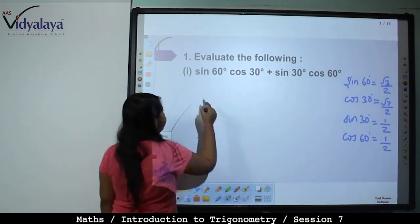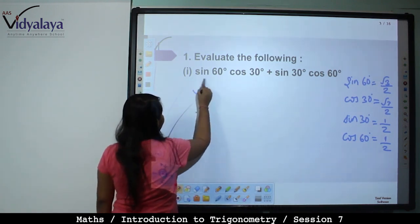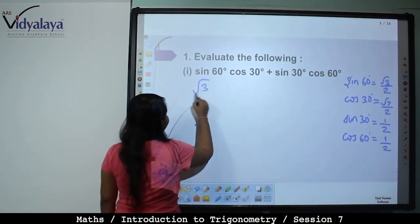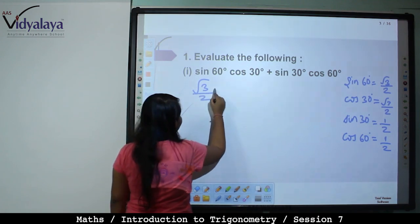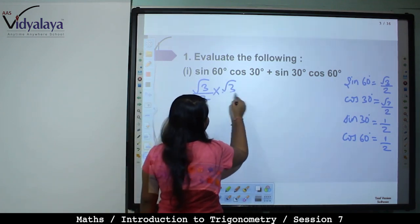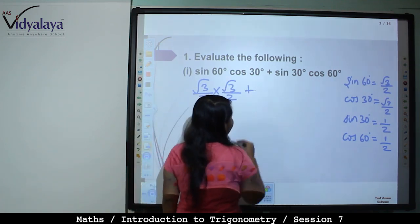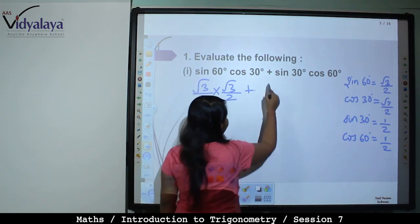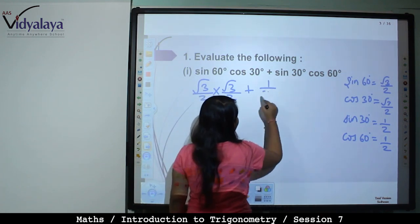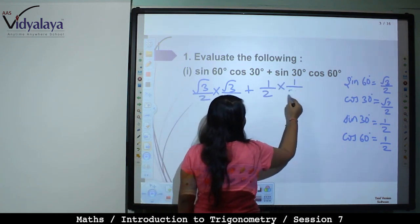So, sin 60 into cos 30: root 3 by 2 into root 3 by 2, plus sin 30 is 1 by 2 and cos 60 is 1 by 2.